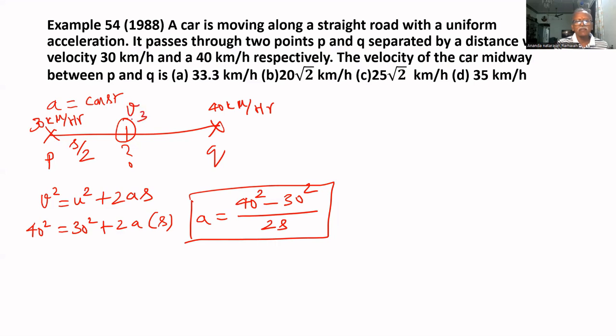We will assume V3. This is U, V1. Let us assume this as V2. V2 we have to find. Distance is S by 2. V2 square equal to 30 square U square plus 2A S by 2.